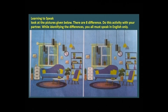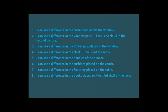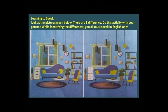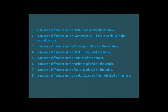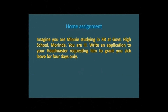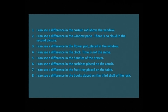Dear students, here is a picture and you need to identify the differences. I can see a difference in the curtain rod above the window. I can see a difference in the window pane. There is no cloud in the second picture. I can see a difference in the flower pot placed in the window, in the clock — the time is not the same — in the handles of the drawer, in the cushions on the couch, in the fruit tray, and in the books placed on the third shelf of the rack.